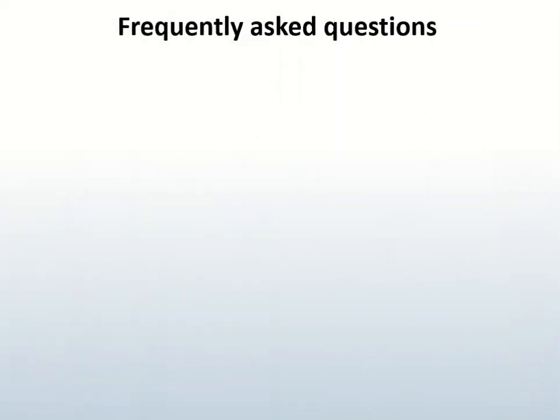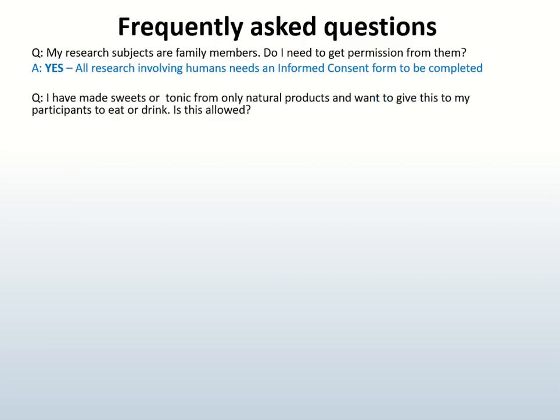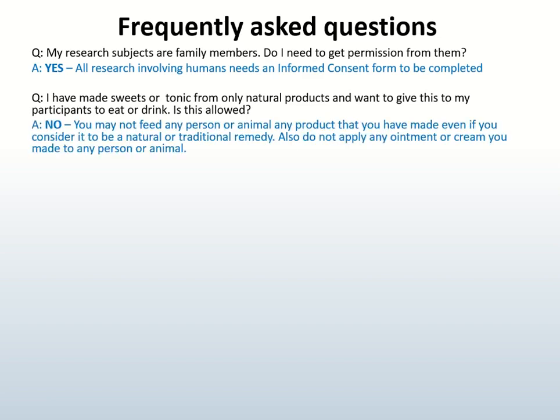Here are some frequently asked questions. Question 1: My research subjects are family members. Do I need to get permission from them? Yes. All research involving humans needs an informed consent form to be completed. Question 2: I have made sweets or tonic from only natural products and want to give this to my participants to eat or drink. Is this allowed? No. You may not feed any person or animal any products that you have made, even if you consider it to be natural or traditional.